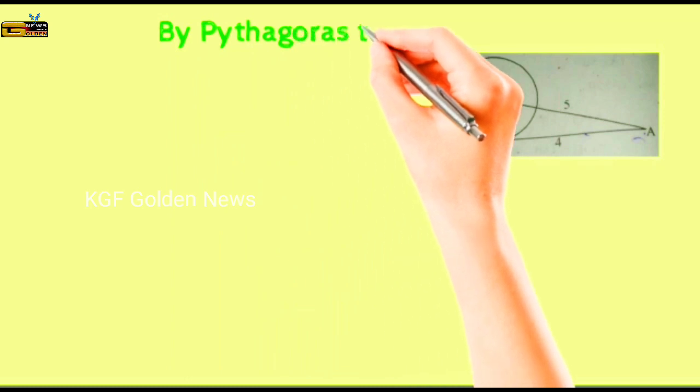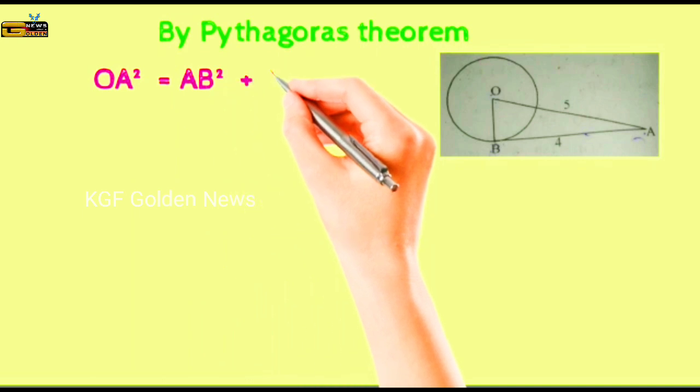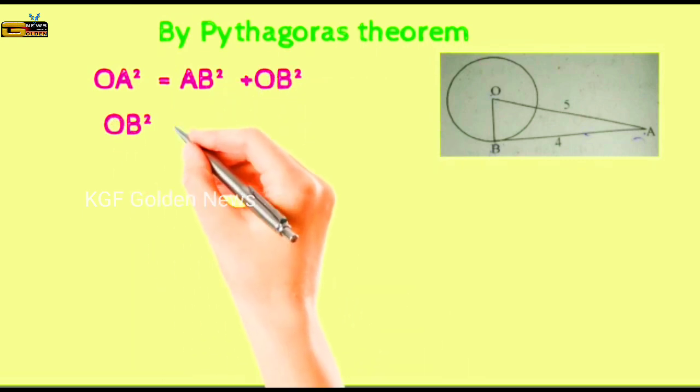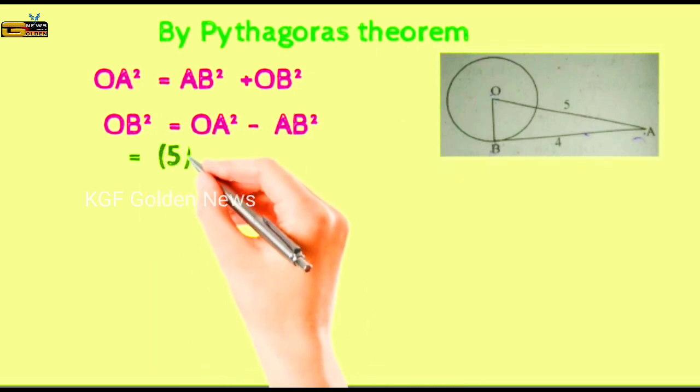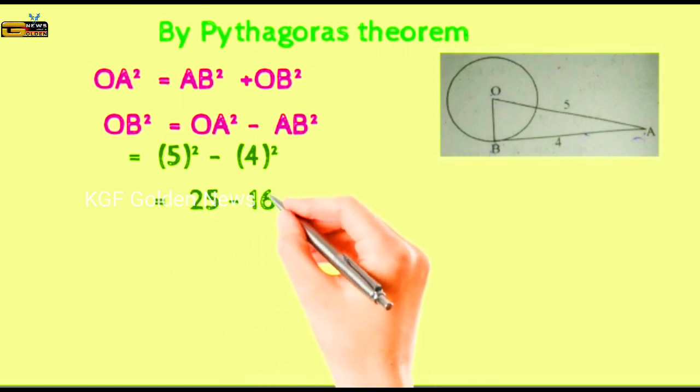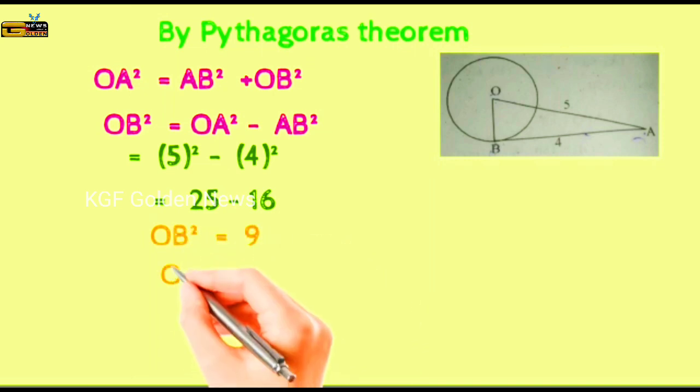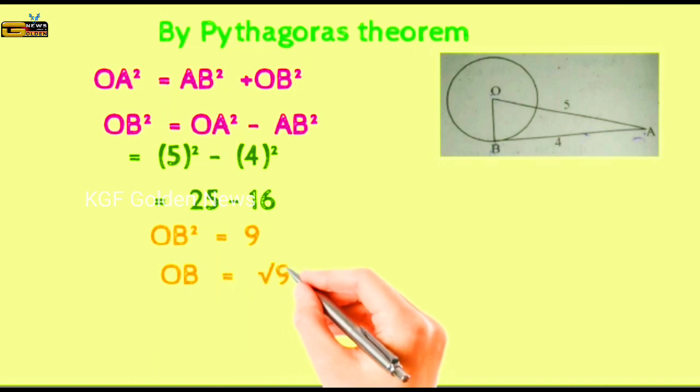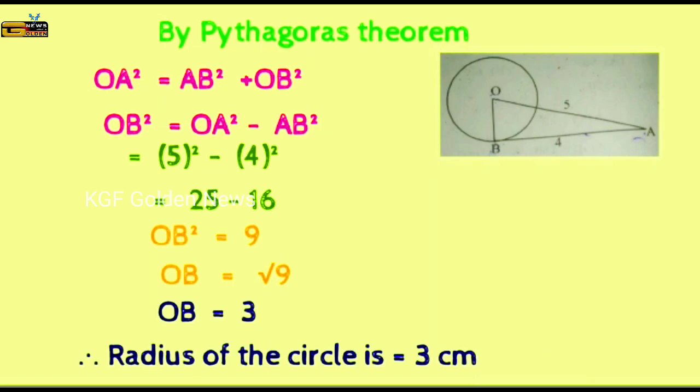By Pythagoras theorem, OA square is equal to AB square plus OB square. OB square is equal to OA square minus AB square, equal to 5 square minus 4 square, equal to 25 minus 16. OB square is equal to 9. OB is equal to square root 9, OB is equal to 3 cm. Therefore, radius of the circle is equal to 3 cm.